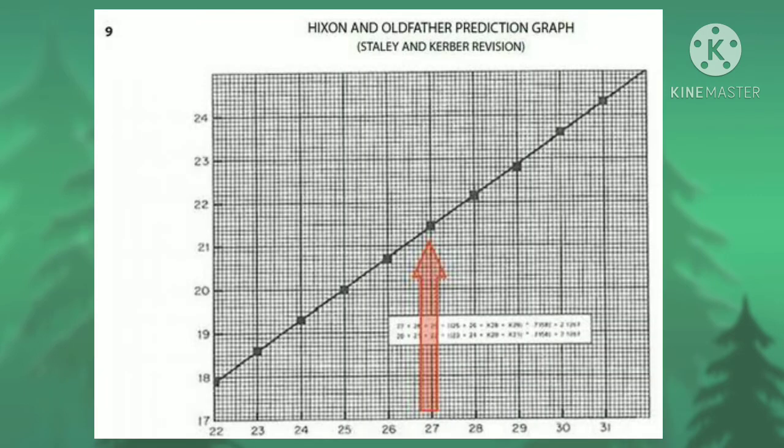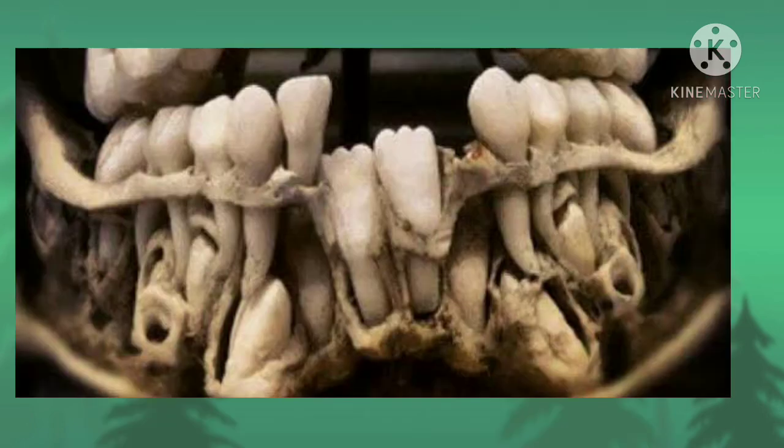From the given chart, the width of the canine and premolar can be read based on their width of incisors, and this method is used in the mandibular arch only.